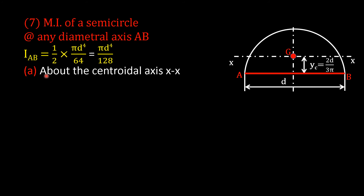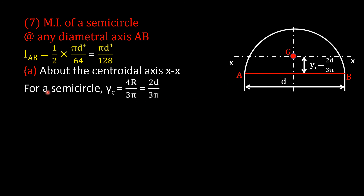The moment of inertia of the semicircle about its centroidal axis XX passing through centroid G: for a semicircle, y_c = 4r/(3π) = 2d/(3π), where d is the diameter. Here y_c is the distance of axis AB from the centroidal axis XX.